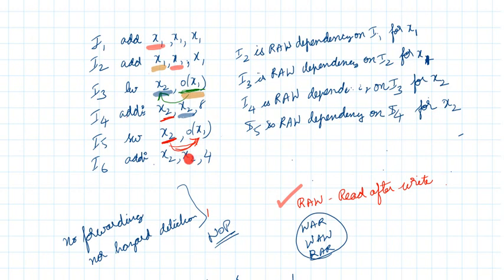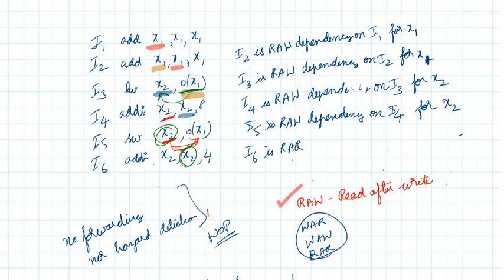In the sixth instruction we are reading x2, and between instructions five and six the dependency is read-after-read. Read-after-read is not a dependency issue in pipelining. So we don't have a pipeline issue here — I6 reading x2 after I5 reads x2 will not cause any pipelining issue.